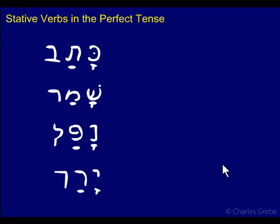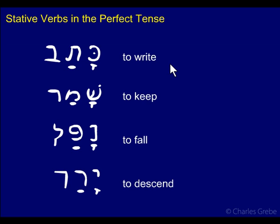I've got a list here. We have KATAV, which means to write; SHAMAR, which means to keep; NAFAL, to fall; and YARAD, to descend. These are all dynamic — to write is something you do, it's not a state or condition. To keep, to fall, to descend — they all have the PATACH as their theme vowel, so that's consistent with what we've said so far.